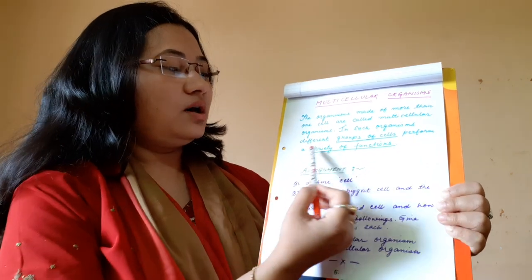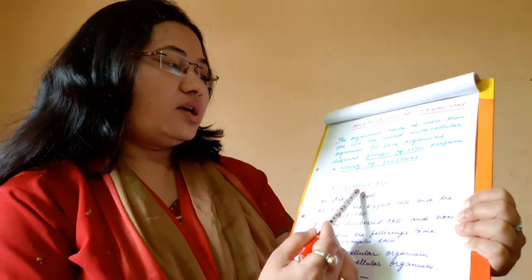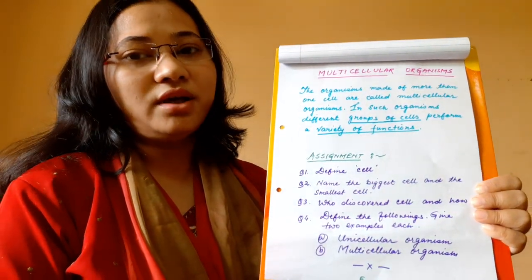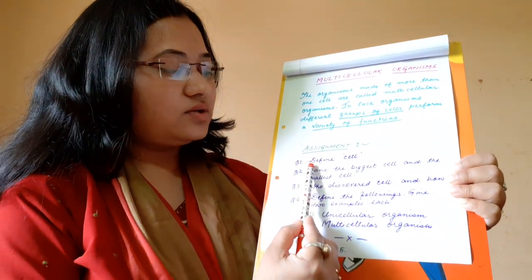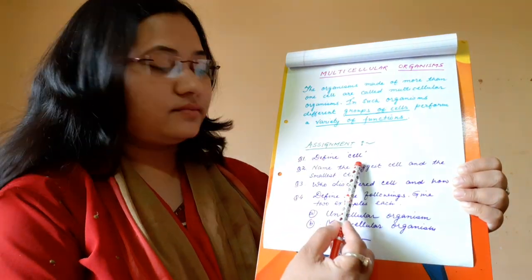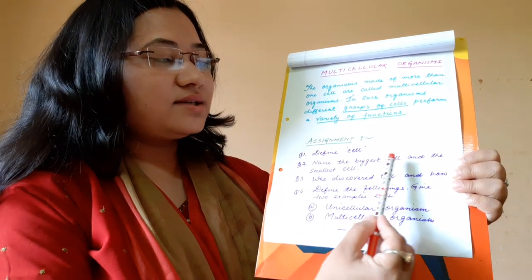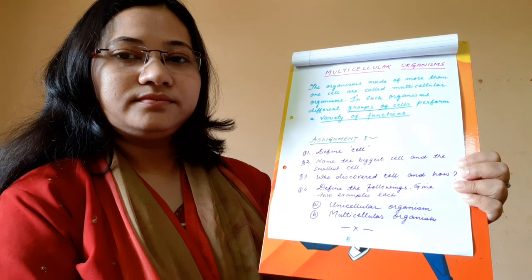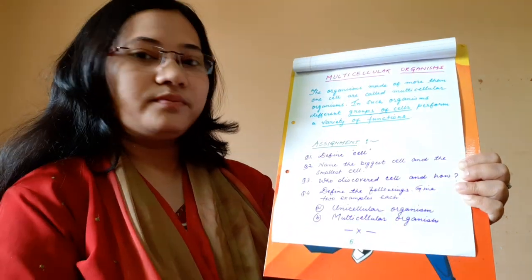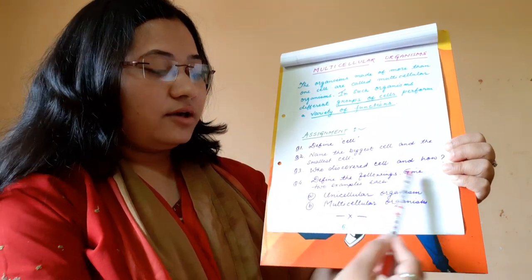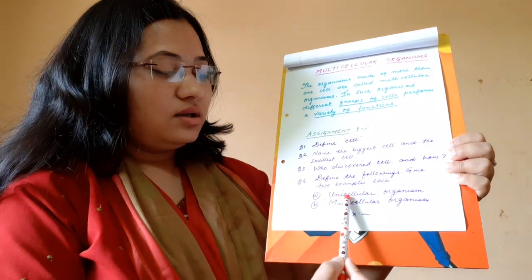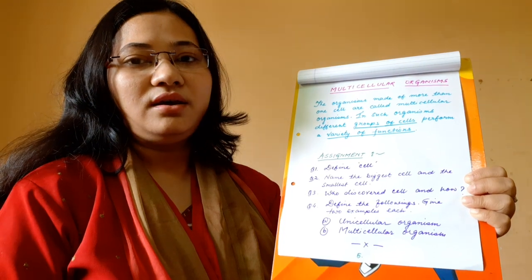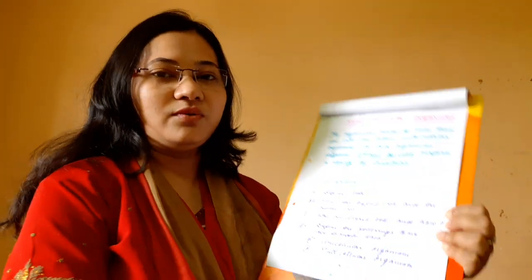Today's topic ends here. Your assignment questions are: (1) Define cell. (2) Name the biggest cell and the smallest cell. (3) Who discovered the cell and how? (4) Define the following and give two examples each: (a) unicellular organisms, (b) multicellular organisms. Please write these in your class copies and submit them when school reopens. Thank you for watching.